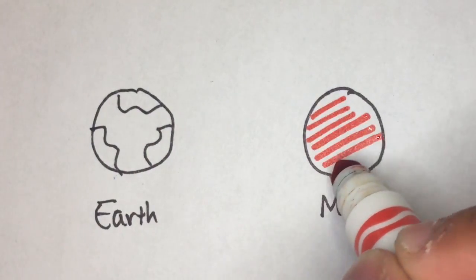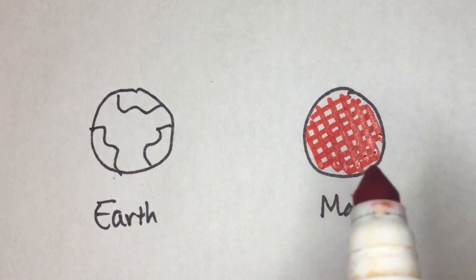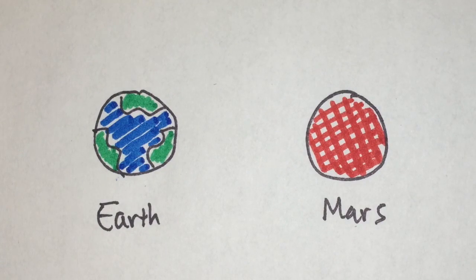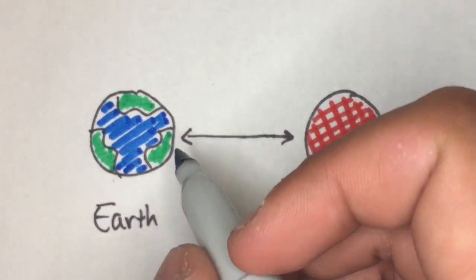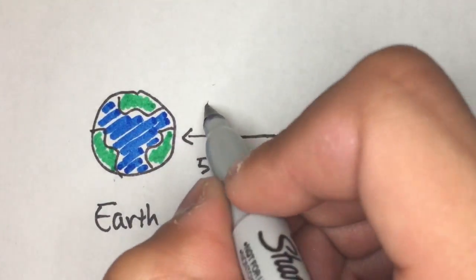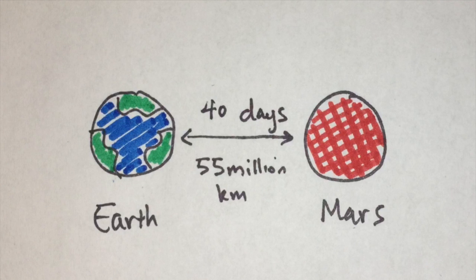Mars has always been our friendly neighbor in the solar system. The red planet is the next celestial object closest to us after the moon, even though it's 55 million kilometers away and takes around 40 days to get there using the fastest spacecraft launched from Earth.